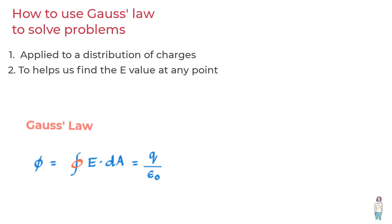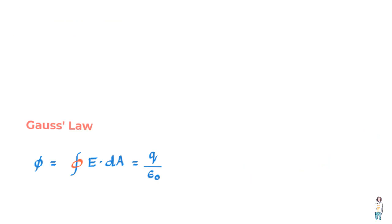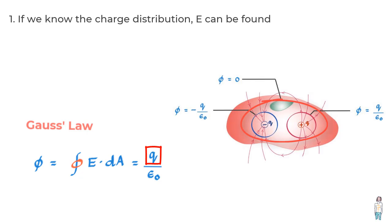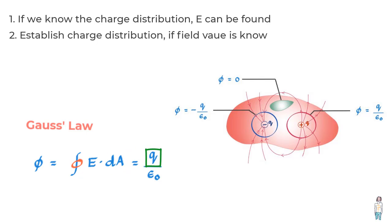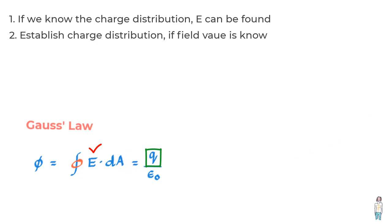So seeing the formula we can say that Gauss's law can be used in two ways. One is if we know the charge distribution inside the closed Gaussian surface, which should also have symmetry, we can find the field value E at the surface. The other way is we establish the charge distribution if we know the field value. So let us use Gauss's law in both ways and get more familiar with the law and its application in this lesson.